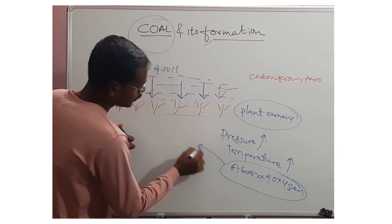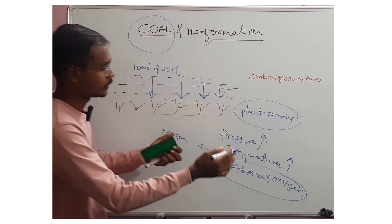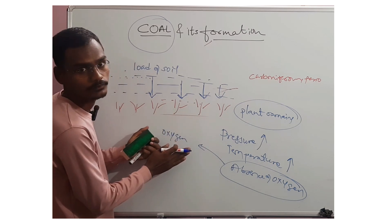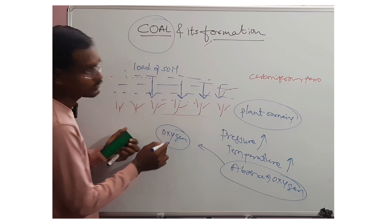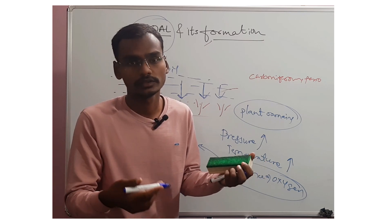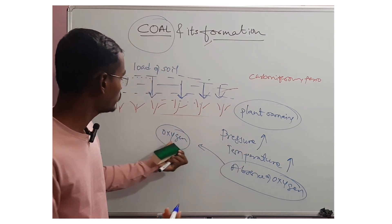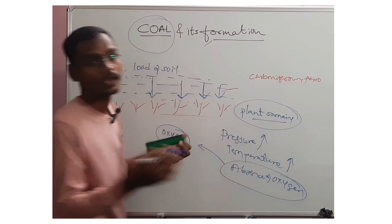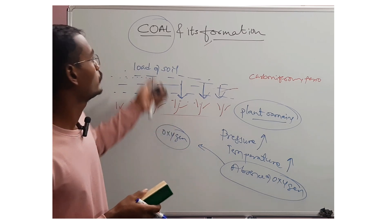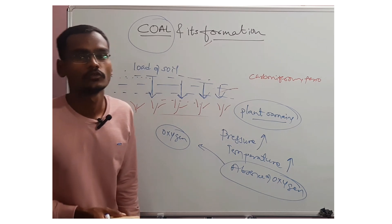Let's imagine what would happen if oxygen was present under those conditions of high pressure and temperature. What would happen to the plant remains if oxygen was present? Oxygen means burning — anything that burns, what we see every day, is because of the presence of oxygen. The presence of oxygen would have turned these plant remains into ash. Everything would have burned, and we would not get this coal at all. This is our understanding of the formation of coal.